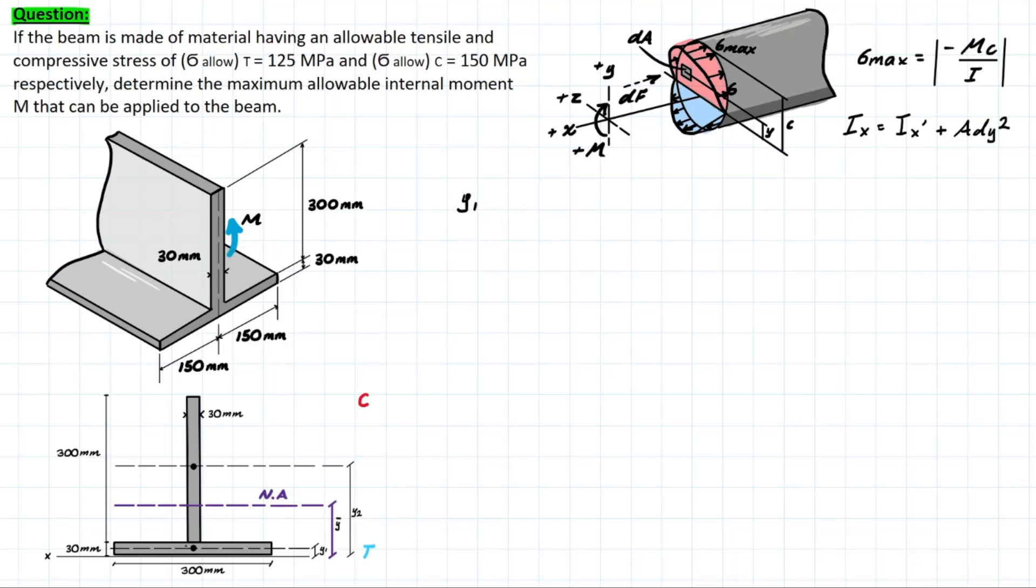If we write down y1 for this first shape, we know that it's going to be exactly half of the thickness. So we have 30 mm divided by 2, which gives us 15 mm. Similarly, we have y2, which is going from the global x-axis. We have to take that 30 mm jump, and then we're taking half of this length of shape two, which is 300 mm. So we're going to have 30 mm plus half of the 300, and that leaves us with 180 millimeters.